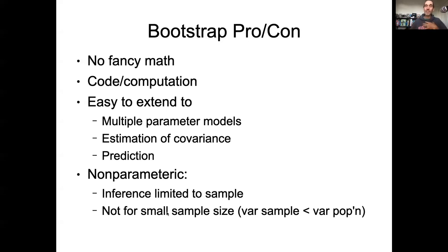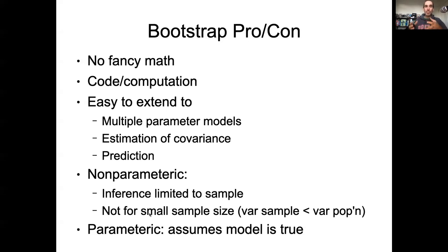In general, when you have small sample sizes, there is an advantage to using parametric approaches because you're able to generate a wider range of variability in your data. However, the problem with the parametric bootstrap is that your inference about parameter uncertainty only makes sense if the model you wrote down is reasonable. If your simulated data from a parametric bootstrap does not look like the real data, then the parameter estimates that come out of it will not be accurate.